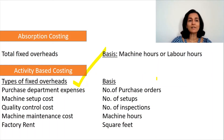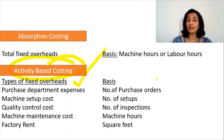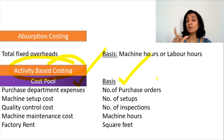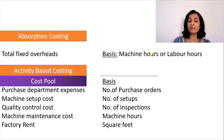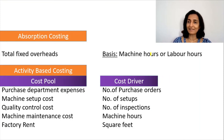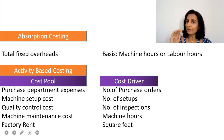The types of fixed overheads under activity-based costing are known as cost pools, and the basis on which each cost pool is divided between products is known as the cost driver. These are two key terms to keep in mind. The details of the cost pool and the cost driver will be given in each question.